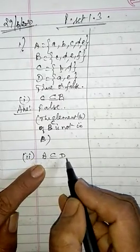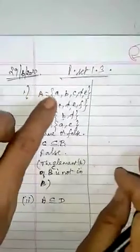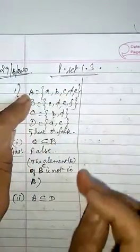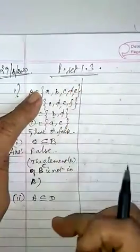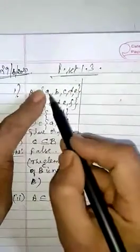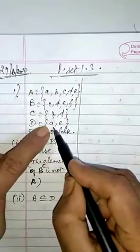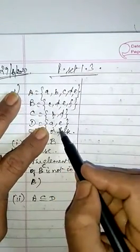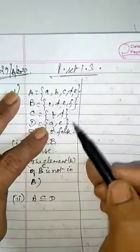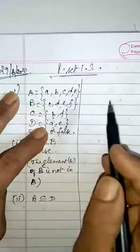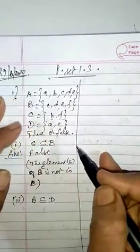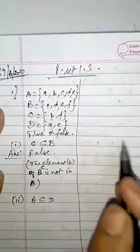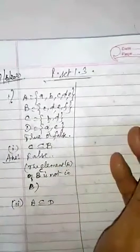We have to check. What are the elements of A? A, B, C, D, E. We have to see if all these elements are in D. First, A — A is here in D. Next, B — is B there in D? It is not at all there. So there is no need to check the other elements. If even one element is not there, it is not a subset of the given set.